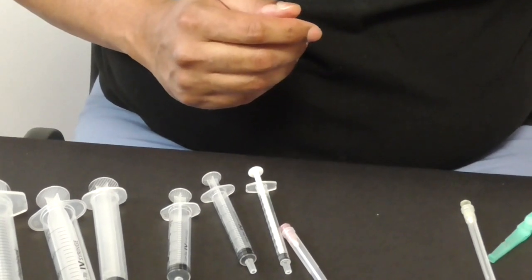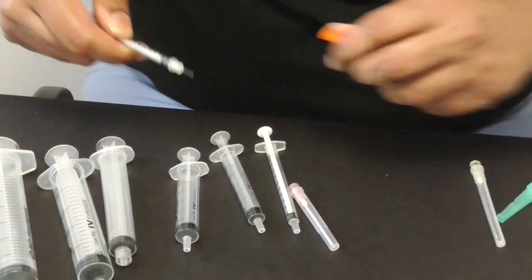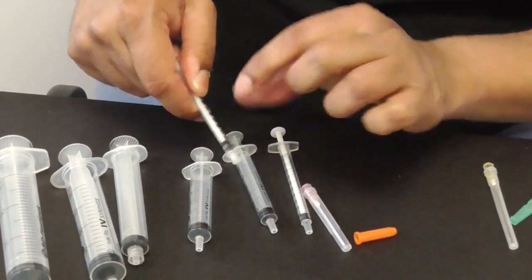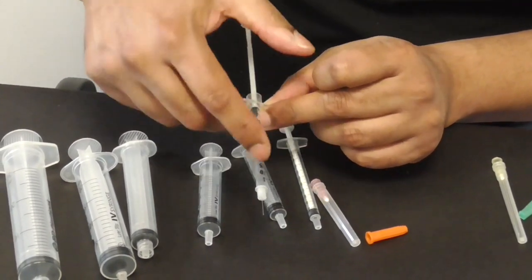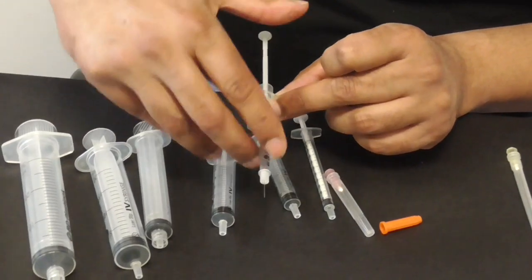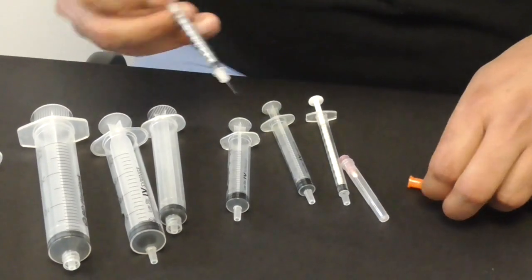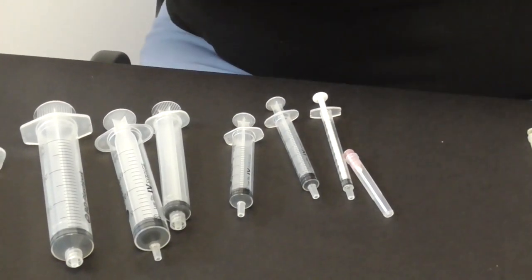Then there's insulin syringes and the insulin syringes actually have an inbuilt needle so the needle's an integral part of the syringe and it goes up to a much smaller calibration. It gives you units of insulin as you're drawing up and the needle is very very fine indeed. And this is for diabetics when they're injecting themselves with insulin.